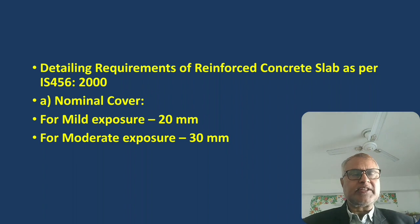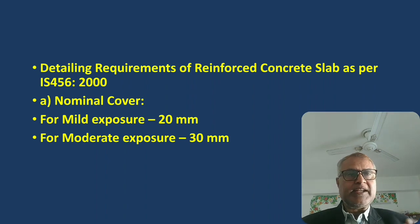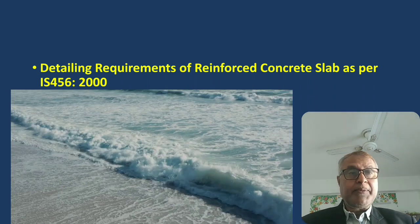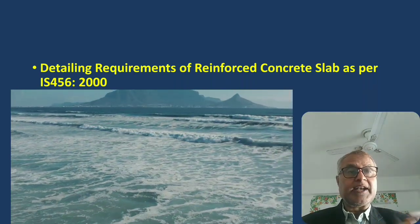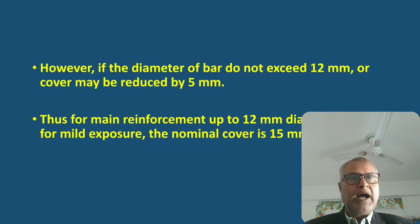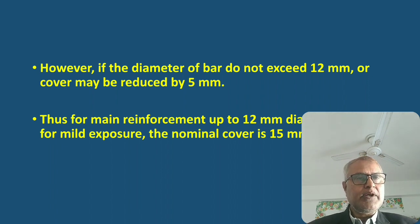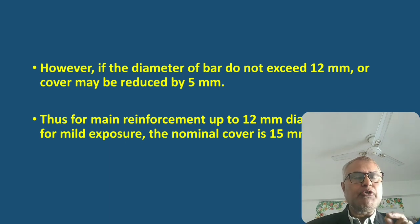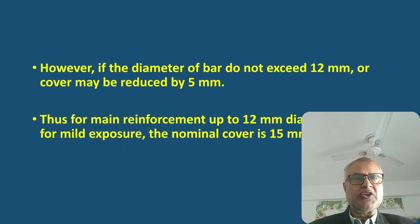Exposure conditions are different: mild, moderate, severe, and more severe. If the diameter of the bar does not exceed 12 mm, then you can reduce the cover by 5 mm. Thus, for main reinforcement up to 12 mm diameter with mild exposure, you can provide a nominal cover of 15 mm.